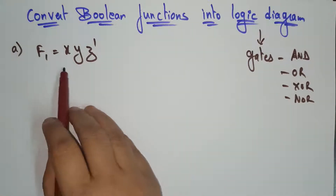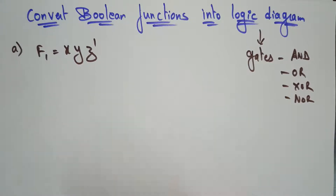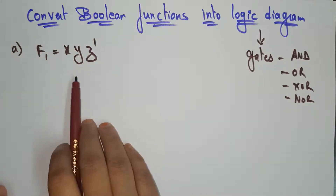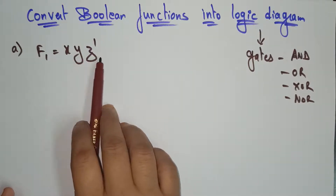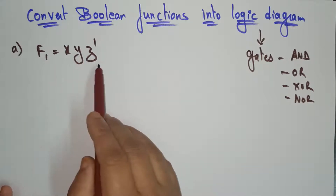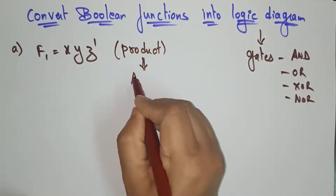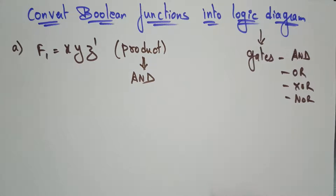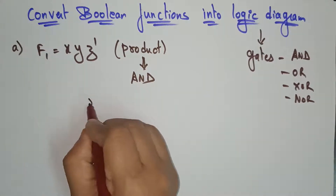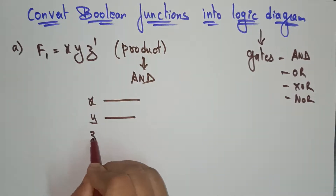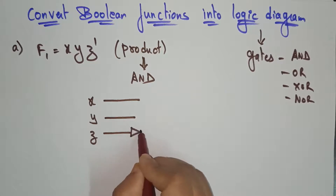Now let's look at the first boolean function, which we need to convert into a logical diagram. The first step is to observe what type of gate is being used. Here we have x, y, z — this is a product. Whenever we have a product, we have to use an AND gate. And z' here is a complement, so we take the NOT gate.